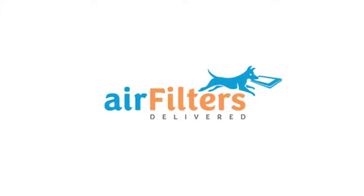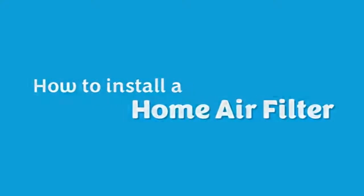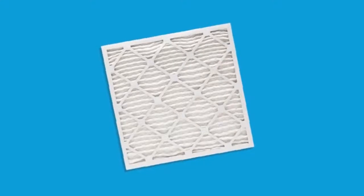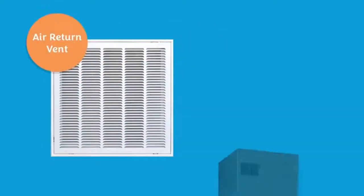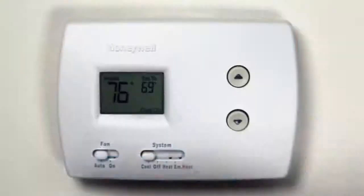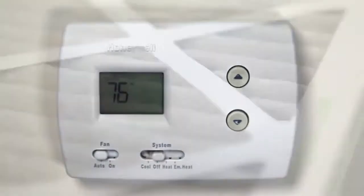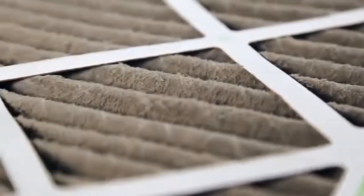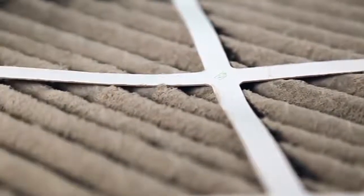Hi, it's Jen from Air Filters Delivered to show you how to install an air filter in your home air conditioning system. The air filter for any central heating and air conditioning system goes in one of two places: your air return vent, or in the actual air handler or furnace. Go ahead and turn your unit off so that as you are changing the filter, you don't accidentally suck a bunch of spilled dust and grit into the unit and undo the good work your filter has done.